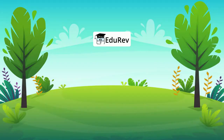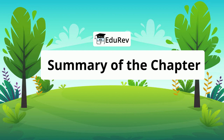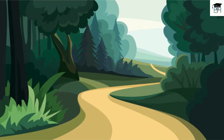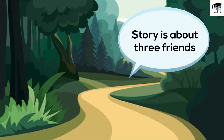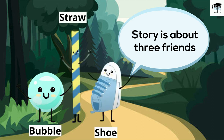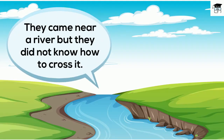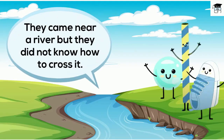So children, this was the complete story of three friends. Let us now see the summary of this interesting story. This story is about three friends — the bubble, the straw and the shoe. They were passing through a forest and came near a river, but they did not know how to cross it.